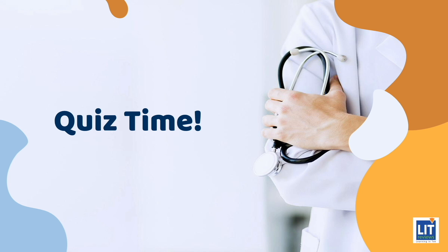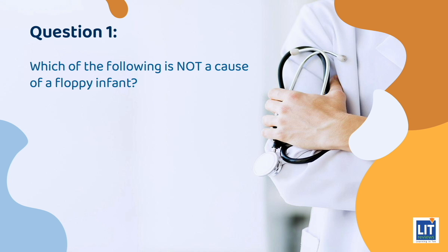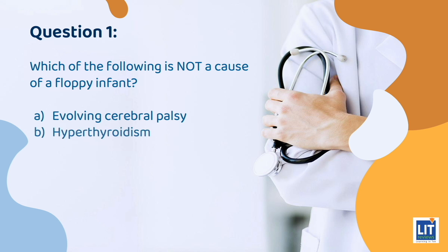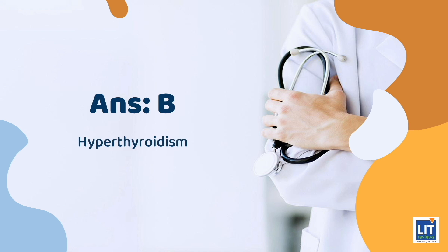Quiz time. Question 1: Which of the following is not a cause of a floppy infant? A. Evolving cerebral palsy. B. Hypothyroidism. C. Myasthenia gravis. D. Sepsis. Or E. Trisomy 21. The answer is hyperthyroidism.